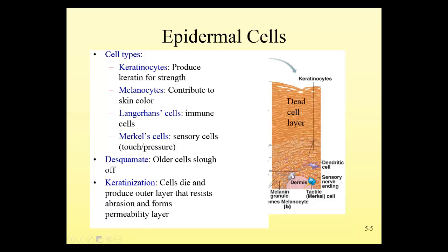Another cell type is Langerhans cells, which are not shown in this diagram, but those are immune cells — so we have the ability to fight infection right within our skin with the help of these Langerhans cells found in the epidermis. Merkel cells are special sensory cells that can detect changes or pressure on the surface. So if a mosquito lands on your skin, that pressure difference is transmitted down through the epidermis and stimulates this Merkel cell, which has a nerve ending that connects to nerves, then to the spinal cord and to the brain to tell you that a mosquito has just landed on your skin.